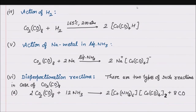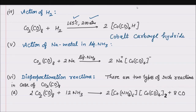Action of hydrogen: when Co2(CO)8 reacts with hydrogen gas at 165 degrees Celsius and 200 atmospheric pressure, it gets reduced to cobalt carbonyl hydride. In this case, hydrogen is +1 and cobalt is -1, so the oxidation state of cobalt changes from 0 to -1.